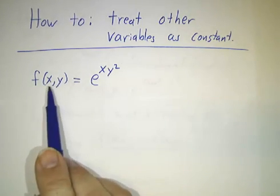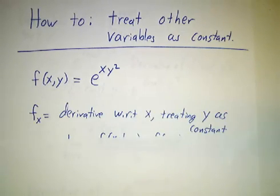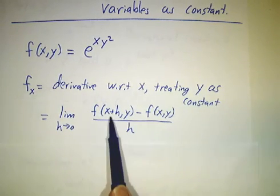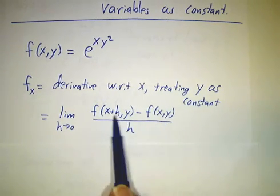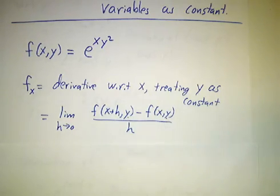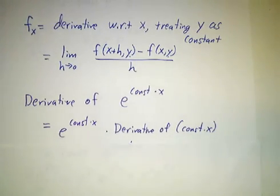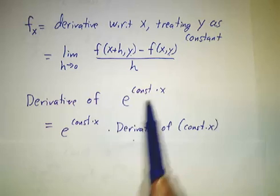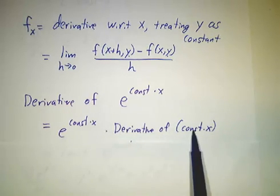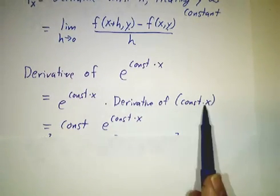So for example, suppose we look at f as e to the xy squared. If we want to take the partial derivative with respect to x, we treat y as a constant. It's a difference in the function value for two different values of x, but the same value of y. But now we know how to take the derivative of e to a constant times x. By the chain rule, that's e to the constant times x times the derivative of constant times x. And the derivative of constant times x is just the constant.